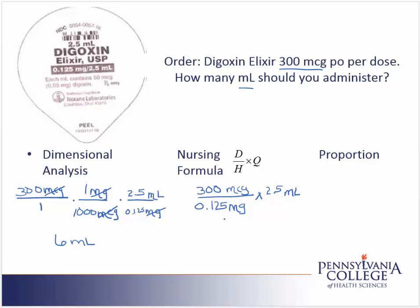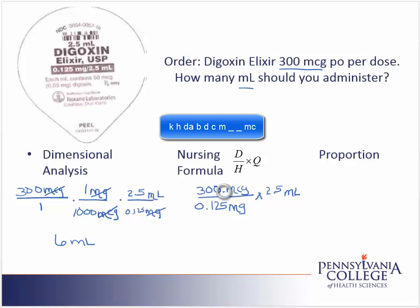In the nursing formula, it is essential that the labels from desired and have cancel. As I can see here, I have micrograms and milligrams, so they do not cancel. I'll need to use my metric line. I've memorized it with 'King Henry died by drinking chocolate milk full of microorganisms.' My order is in that last label — the MC — and I want to move it up to milligrams. I have the placeholders in between, so I end up moving my decimal three places, giving me an equivalent measurement for the order of 0.3 milligrams.